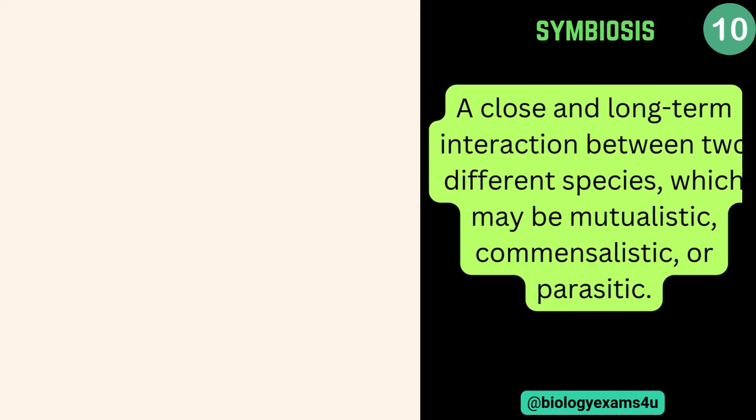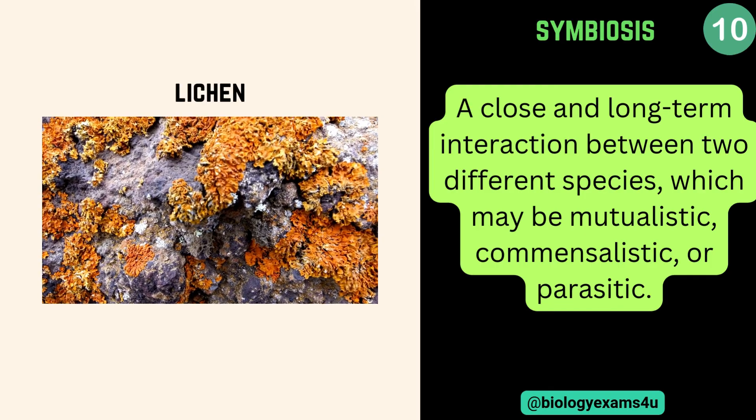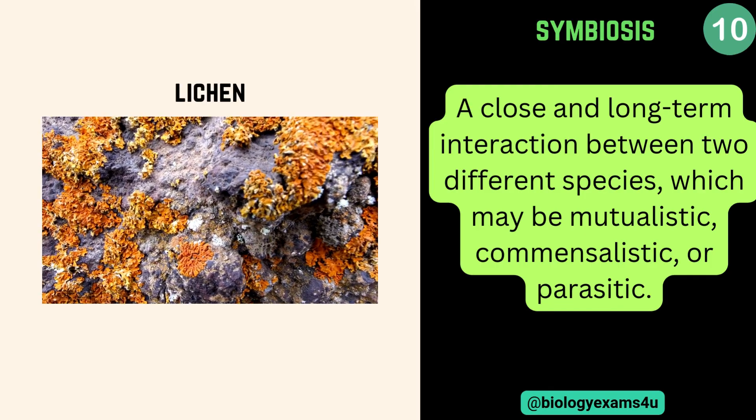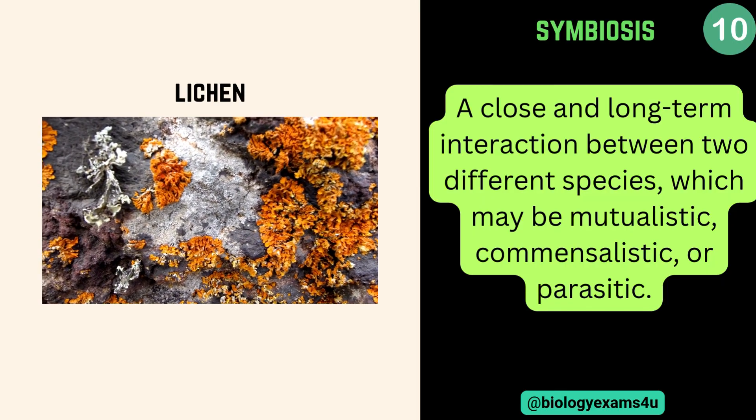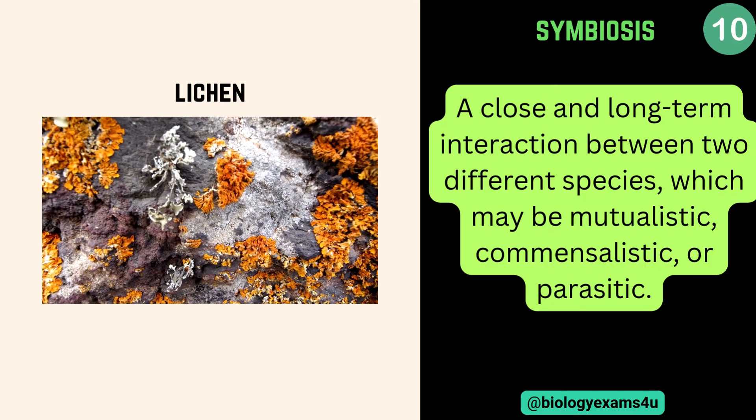The final term is symbiosis. Symbiosis refers to a close and long-term interaction between two different species, which may be mutualistic, commensalistic, or parasitic. So mutualism, commensalism, and parasitism all come under symbiosis. A classical example is lichen, where fungus and algae grow together closely in a long-term interaction. All mutualistic, commensalistic, or parasitic interactions come under symbiosis.